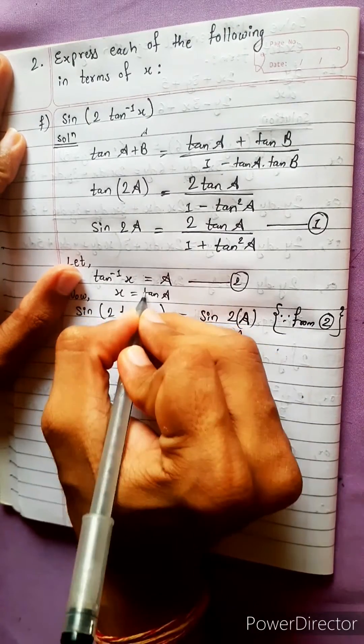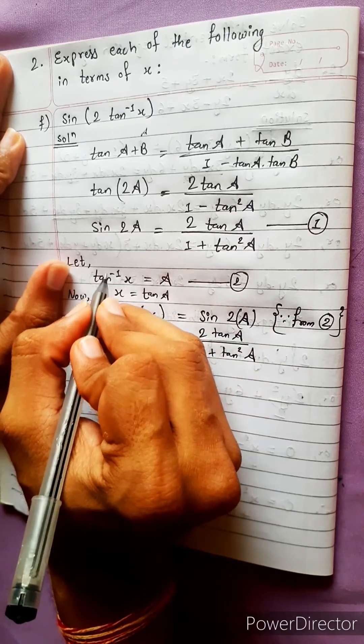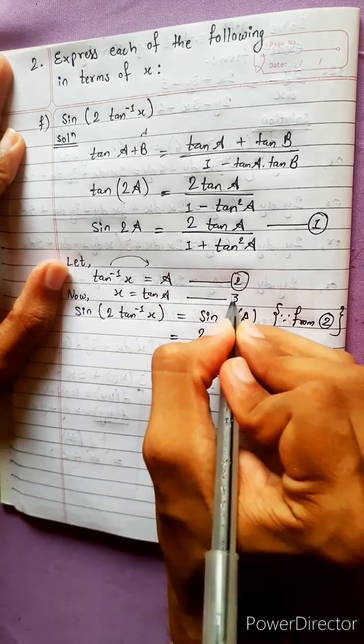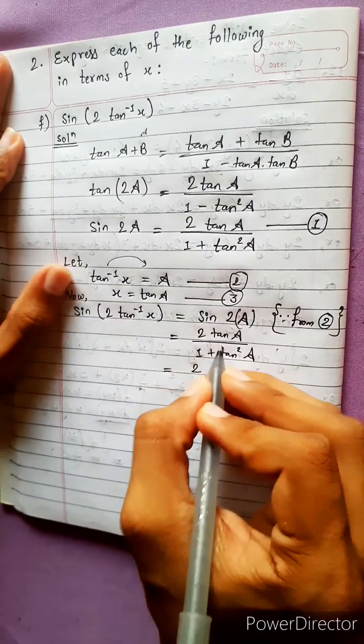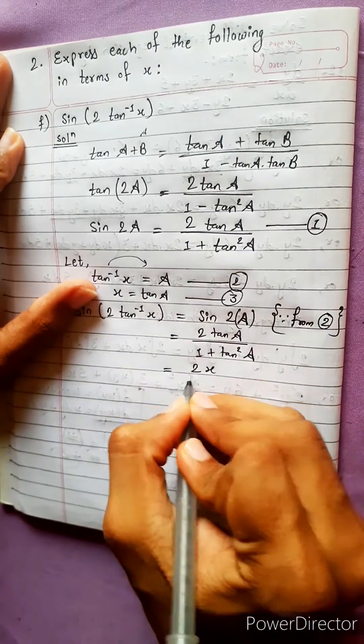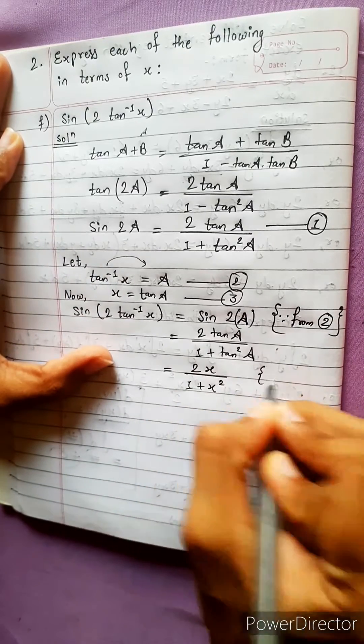Now if this tan goes this side, then x equals to tan A. How? Because this is inverse. Inverse goes this side then it will be tan. Now let this as equation 3. Equals to 2, in place of tan A we write x, 2x upon 1 plus x square.